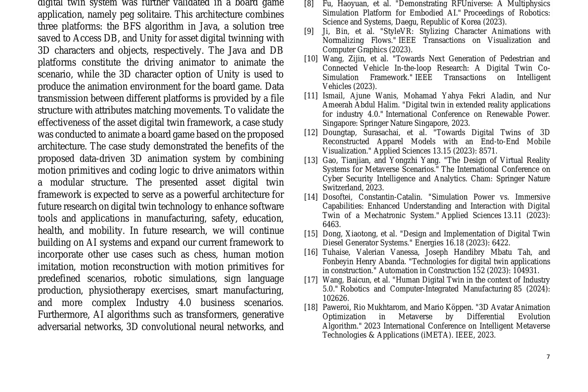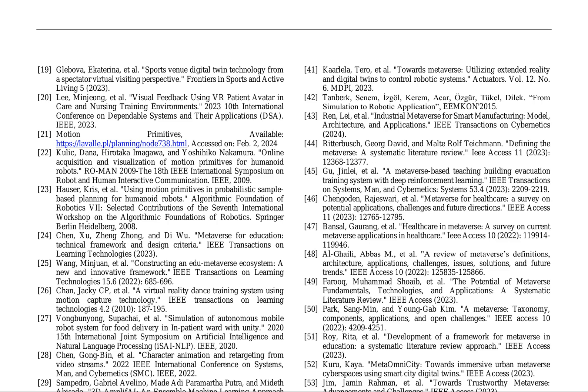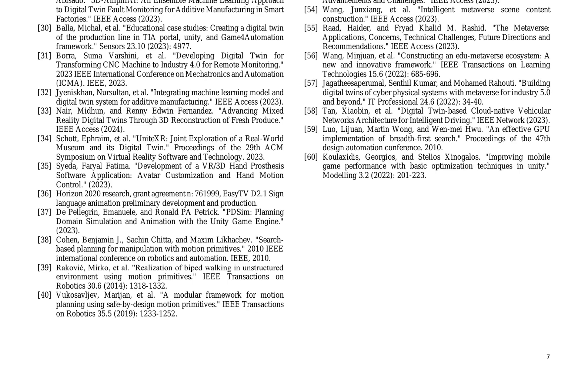The paper proposes an asset digital twin framework that combines motion primitives and coding logic to drive animators within a modular structure. The framework is expected to serve as a powerful architecture for future research on digital twin technology, enhancing software tools and applications in manufacturing, safety, education, health, and mobility. Future research directions include expanding the framework to incorporate other use cases such as chess, human motion imitation, and robotic simulations, and investigating AI algorithms like transformers and generative adversarial networks for motion data generation. The authors also provide a comprehensive review of existing research on digital twins, metaverse, and related technologies, citing 60 references that highlight the potential of digital twins in education, healthcare, and industry.